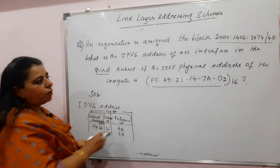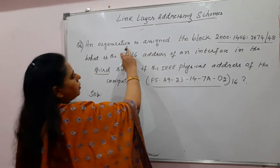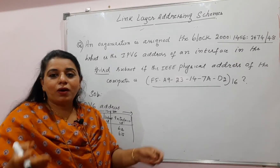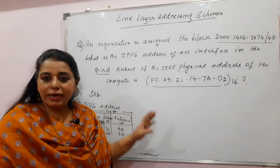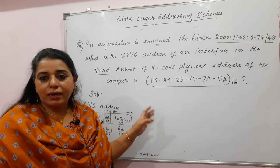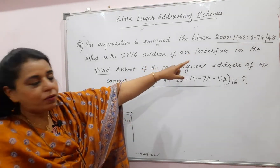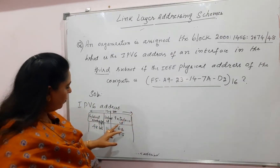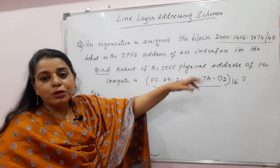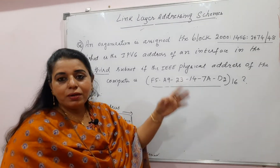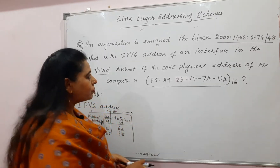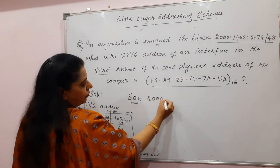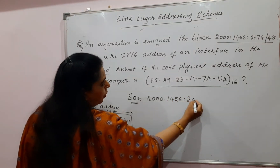All three components are given in the question. The global routing prefix is what the organization is assigned — the block address, just with different nomenclature. So you write down that particular value for the organization block. The subnet ID is also given. The interface ID is not given directly, but the physical address is given, and from the previous method you know how to convert a physical address to interface ID. So you start building the 128-bit solution.